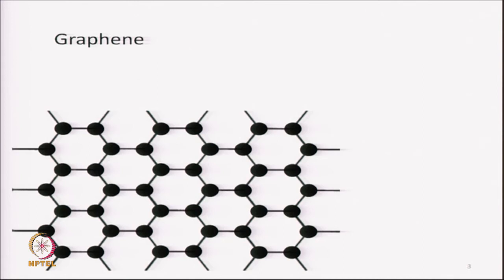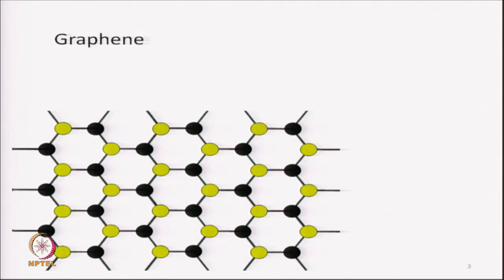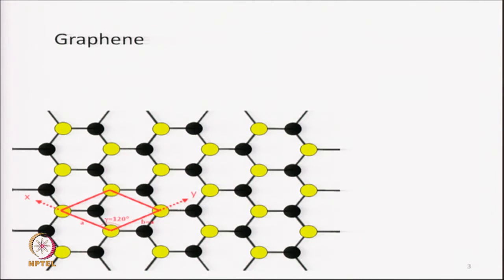We also saw that all carbon atoms in this graphene structure are not equivalent in the lattice sense. The nearest neighbors are not equivalent; it is the next nearest neighbors which form the lattice. I am distinguishing the two kinds of carbon atoms by giving them the colors yellow and black, as we did in the last video. The unit cell selected is a red rhombus unit cell, with lattice parameter A, lattice parameter B along the y-axis, and the angle between them 120 degrees.